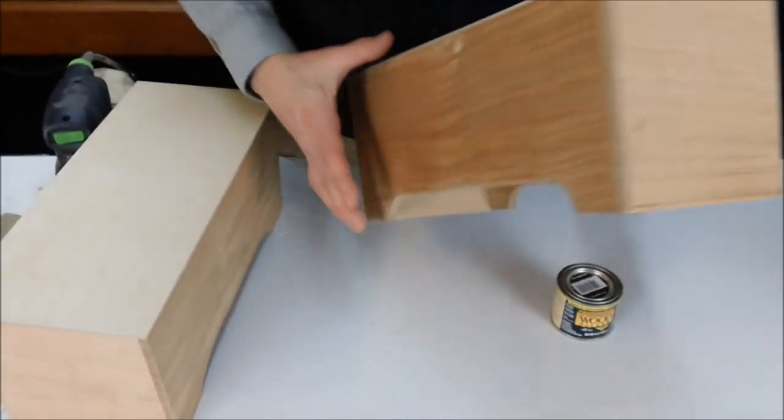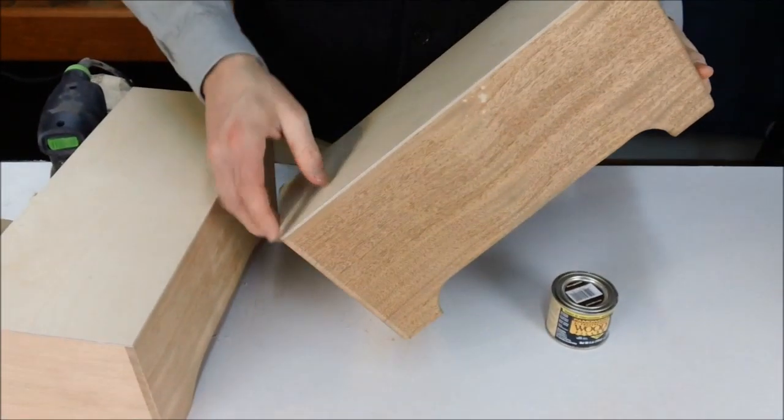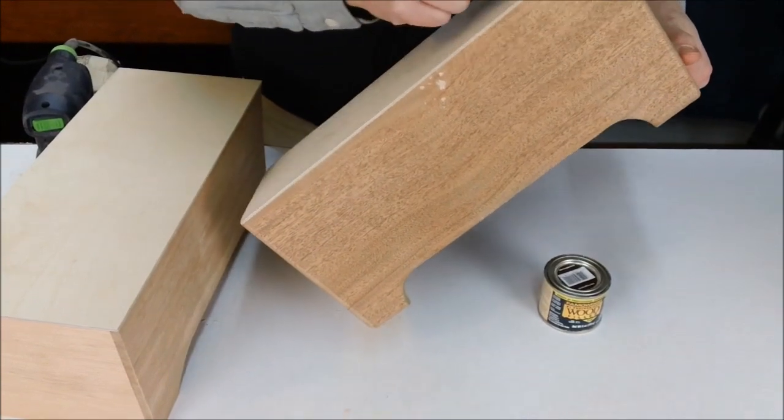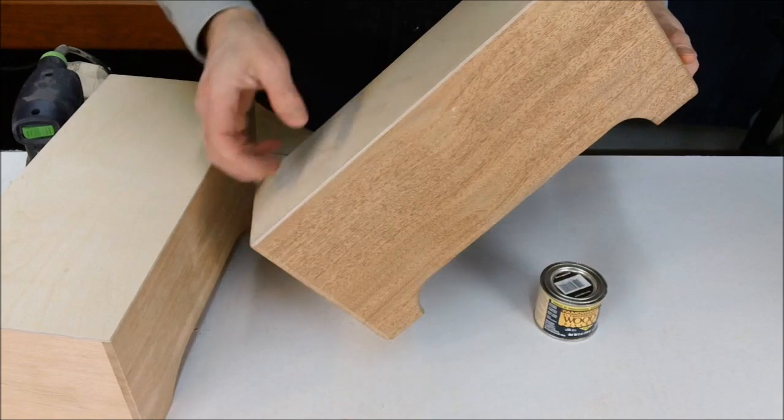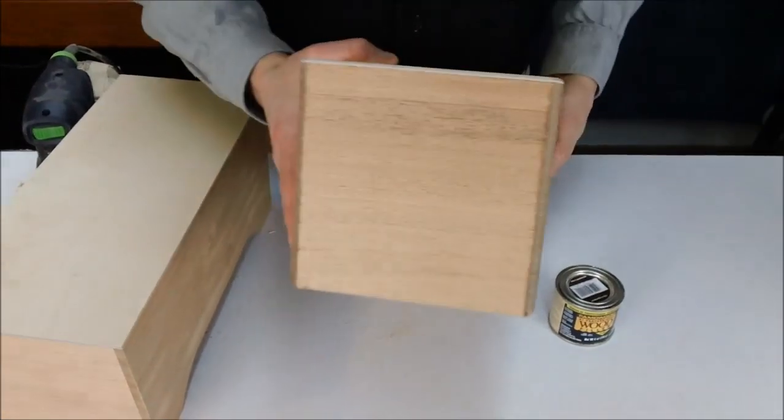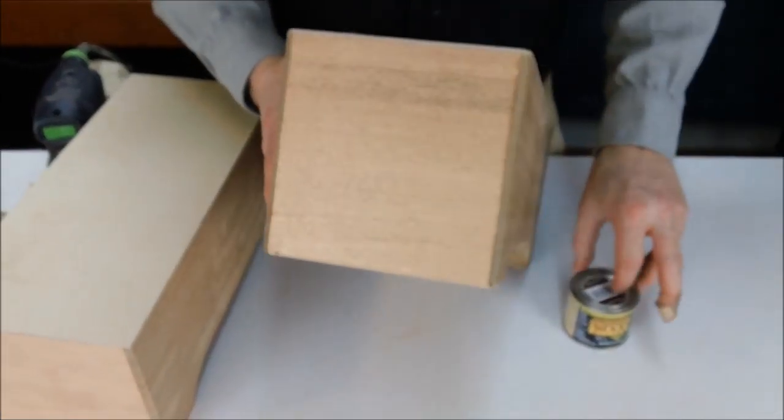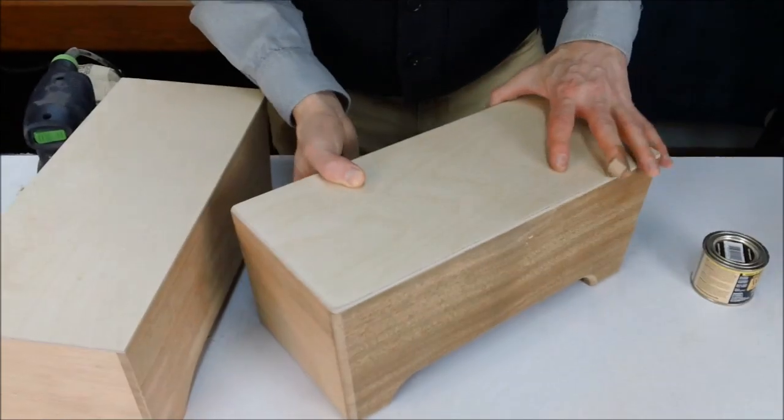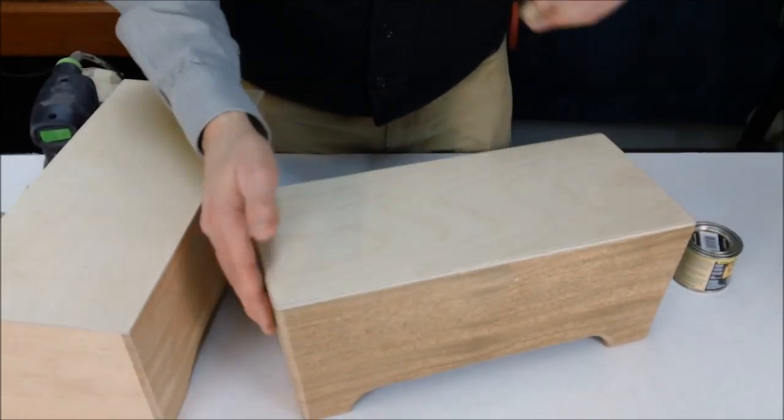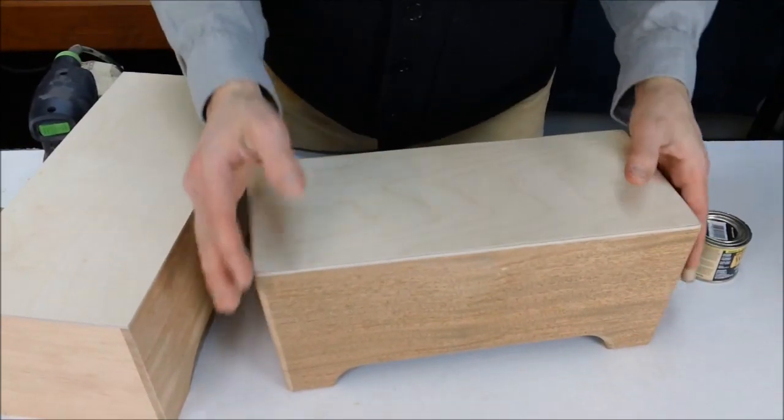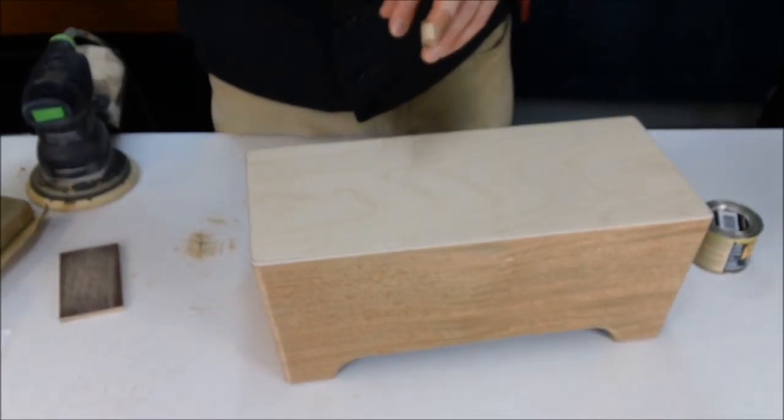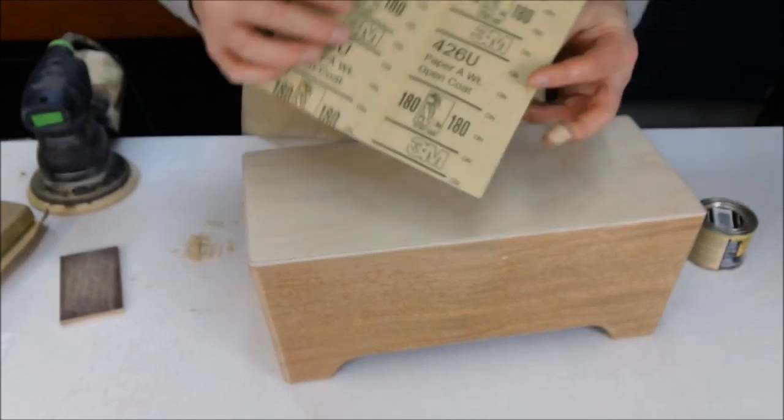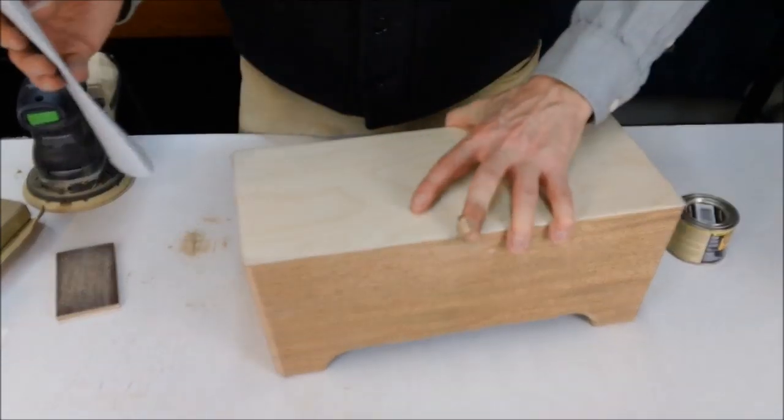You might check along the top where the top piece is glued to the frame and see if there's any gaps there. You could also fill that with some wood filler. So once you have rounded over all your corners and you've got the wood filler in and everything looks good, you're gonna do your final sanding.